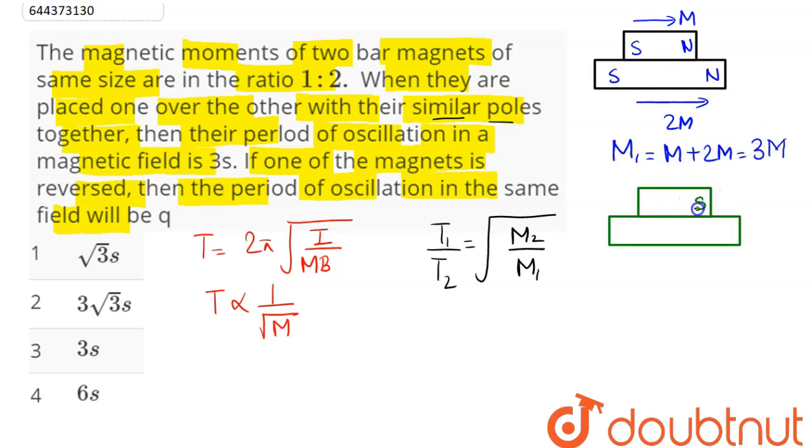So in the second case, opposite poles are placed together. So here we can see this is our M and this is our 2M. So in this case, second case, the resultant will be equal to 2M minus M which is equal to M.